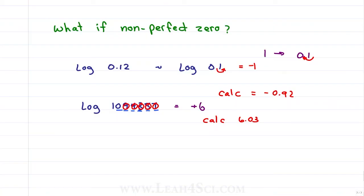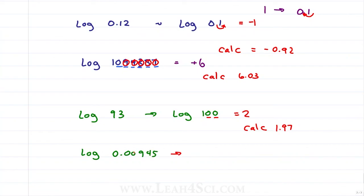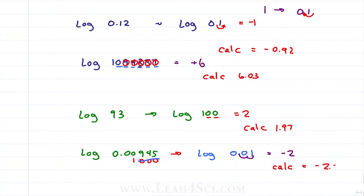If the number is close to 1, round it down to a 1 followed by zeros. If the leading digit is high — an 8 or 9 — round up to the next 10. Log of 93 is close enough to log of 100, which has two zeros in the positive direction, equaling 2. The calculator gives 1.97. For log of 0.00945, the 9 rounds up to 10, shifting one decimal space left, giving log of 0.01 — two decimal places in the smaller direction — so negative 2. Calculator gives negative 2.02.